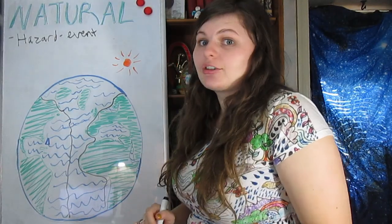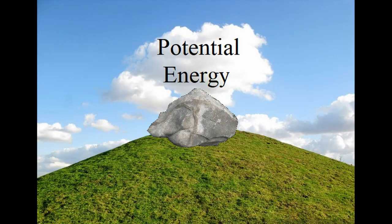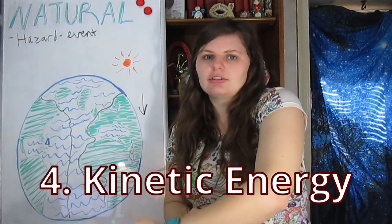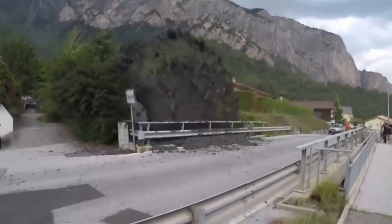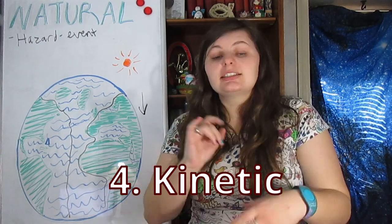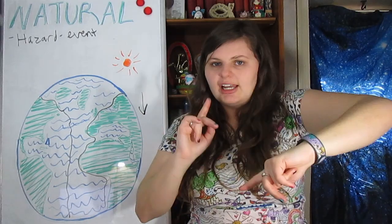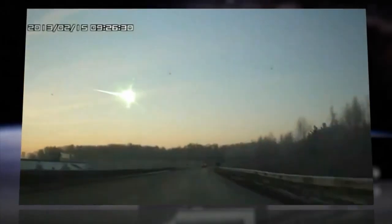The third source of energy is gravity — potential energy. If a rock is at the top of a hill, it has potential energy given by its height, and rolling down converts that into the fourth source: kinetic energy. Gravity can cause landslides, flash floods, and mudslides. Volcanic ash ejected into the atmosphere also has potential energy, whereas kinetic energy is the energy of actual motion — the landslide, lava flow, or a meteor crashing into the Earth.